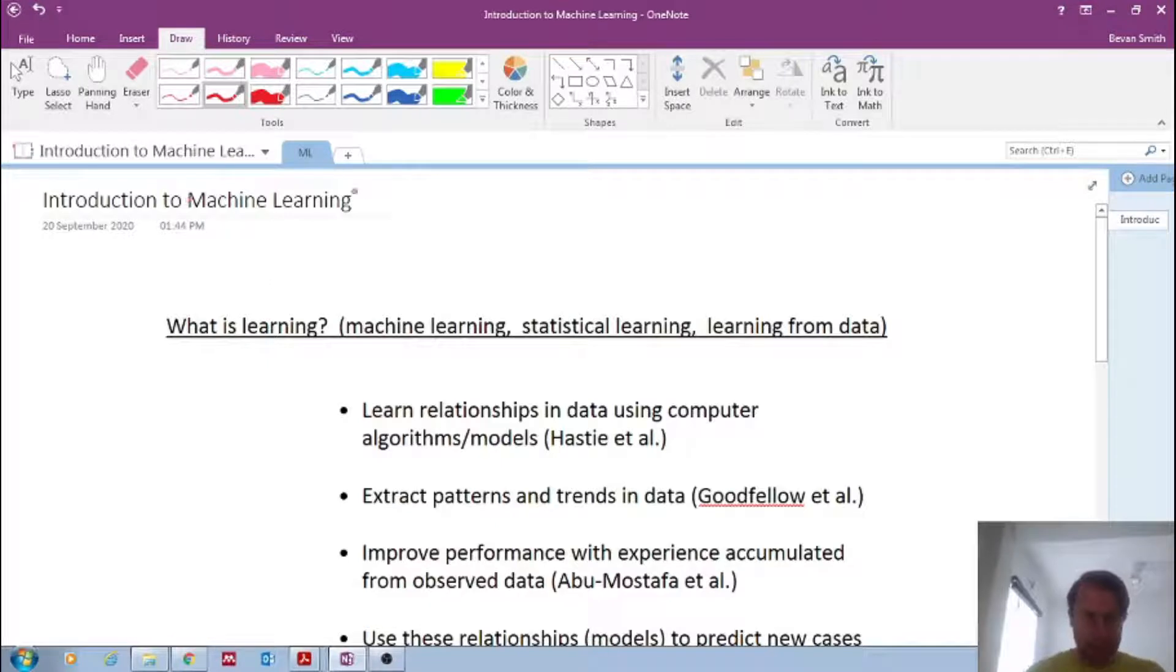Obviously in this word machine learning is this word learning. So what is learning? So the literature calls it machine learning. Other literature calls it statistical learning and others learning from data. So this word is learning. And essentially what's happening is machine learning is to learn relationships in data. Relationships in data using computers, computer algorithms, models.